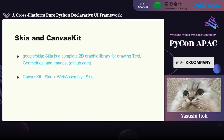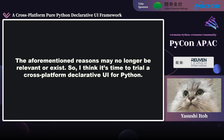About Skia and CanvasKit: Skia is a complete 2D graphics library for drawing text, geometries, and images, made by Google. Chrome, Android, Flutter, and Compose Multiplatform use Skia. CanvasKit is a WebAssembly version of Skia. Anyway, the aforementioned reasons may no longer be relevant, so I think it's time to try a cross-platform declarative UI framework for Python.